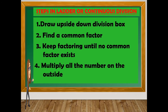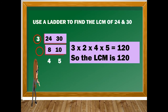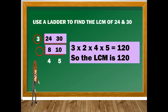Let's use the ladder method to find the LCM of 24 and 30. The common factor is 3. So 24 divided by 3 is 8, and 30 divided by 3 is 10. Now we look for the common factor of 8 and 10, which is 2. So 8 divided by 2 is 4, and 10 divided by 2 is 5.